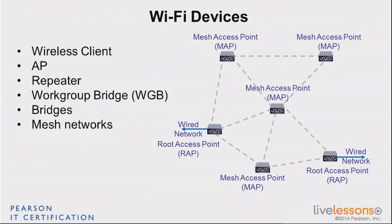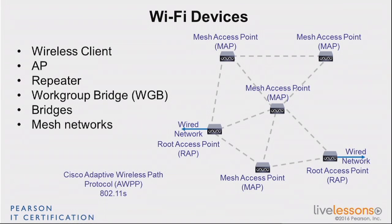Because there are many use cases, there are many protocols that can be used in this type of environment. Cisco uses one protocol developed long ago called Cisco Adaptive Wireless Path Protocol — AWPP. It has been around for a while, more than a decade now.